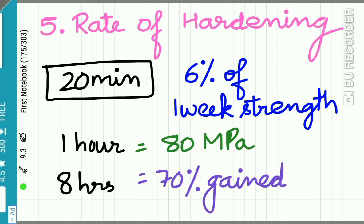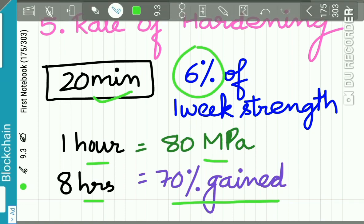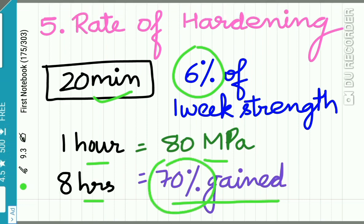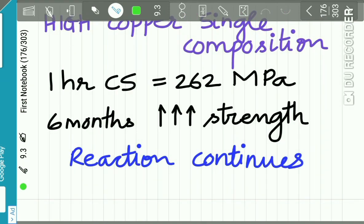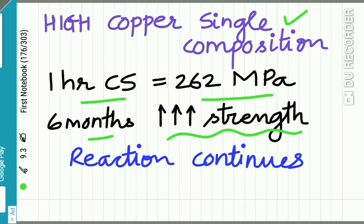The fifth factor is the rate of hardening. Amalgam does not gain strength as rapidly as desired. At 20 minutes — the time the patient is dismissed from the dental chair — the compressive strength is only 6% of the one-week strength. At one hour, compressive strength is 80 MPa; at 8 hours, 70% of the compressive strength is gained. Therefore, patients are advised not to subject the restoration to biting forces for at least 8 hours. The high copper single composition alloy has a one-hour compressive strength of 262 MPa, and this strength gradually increases over 6 months as the reaction continues.